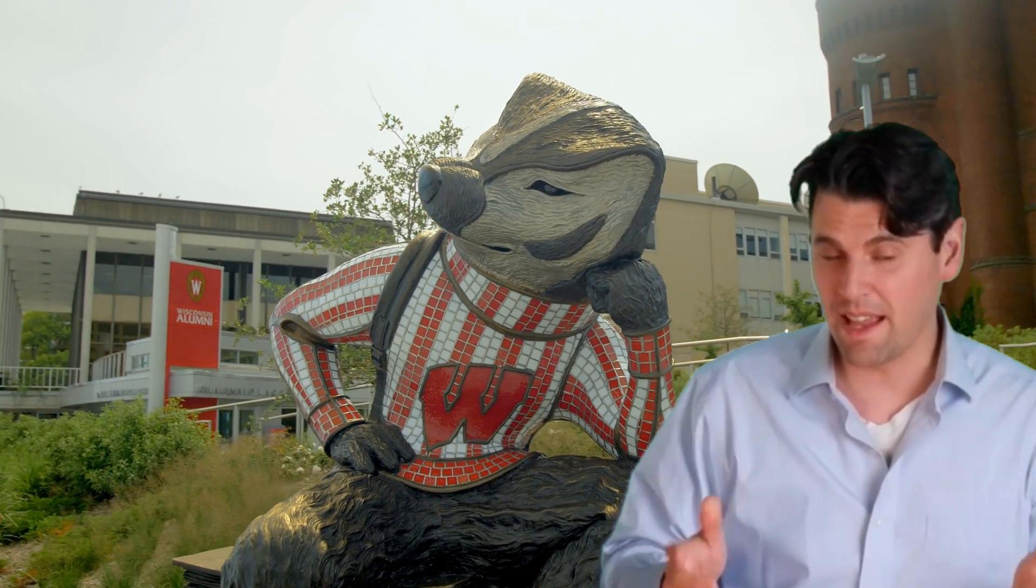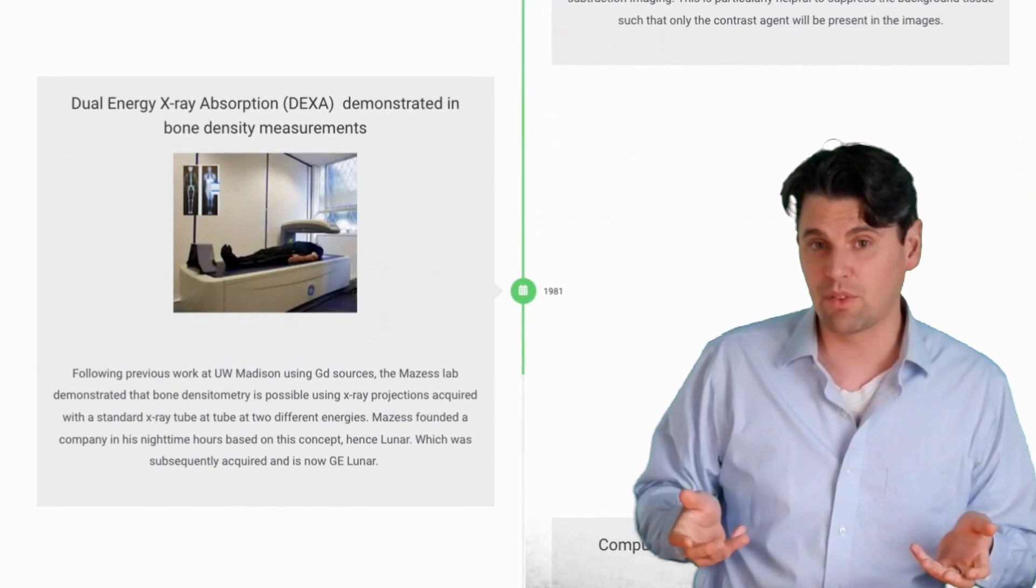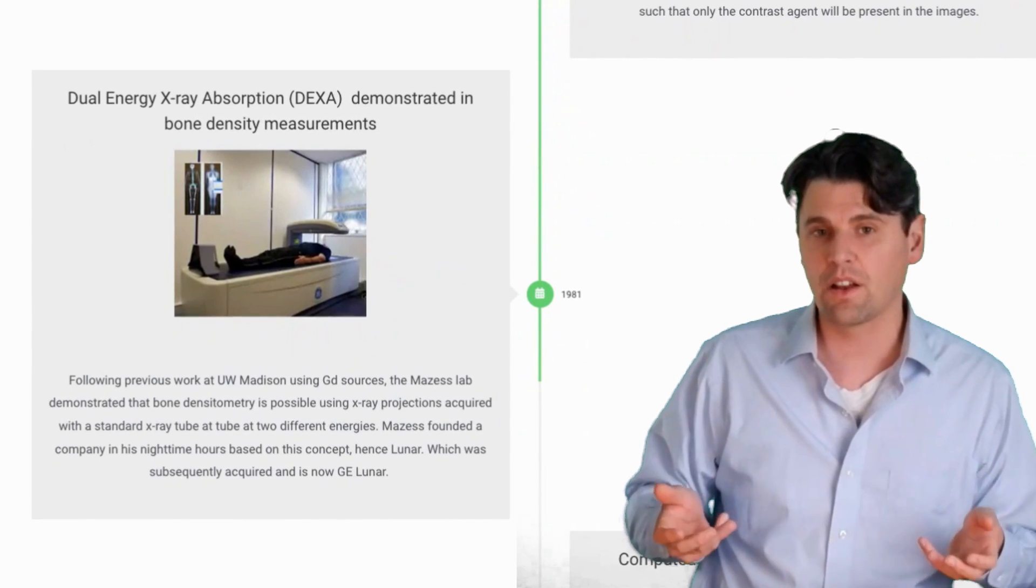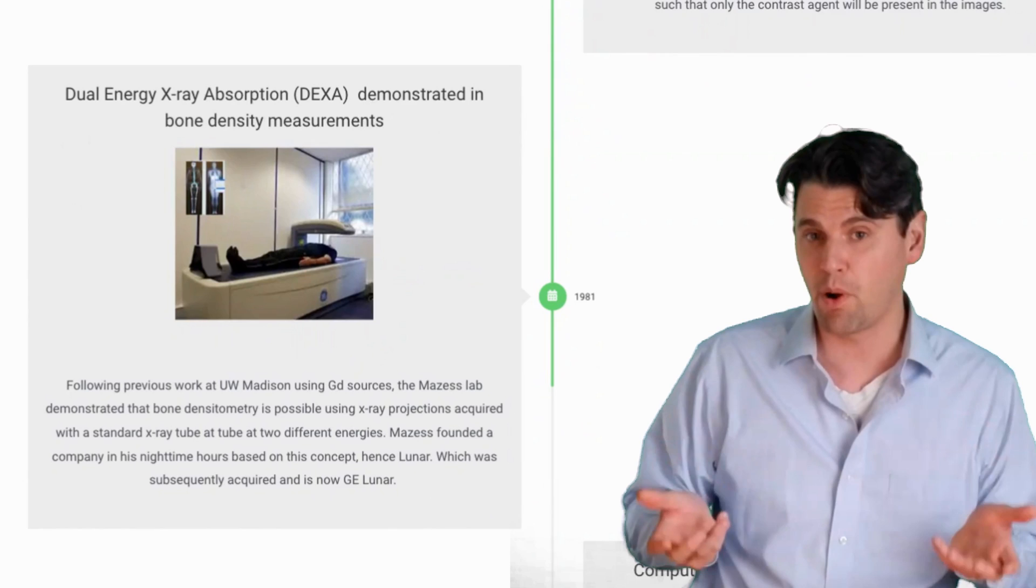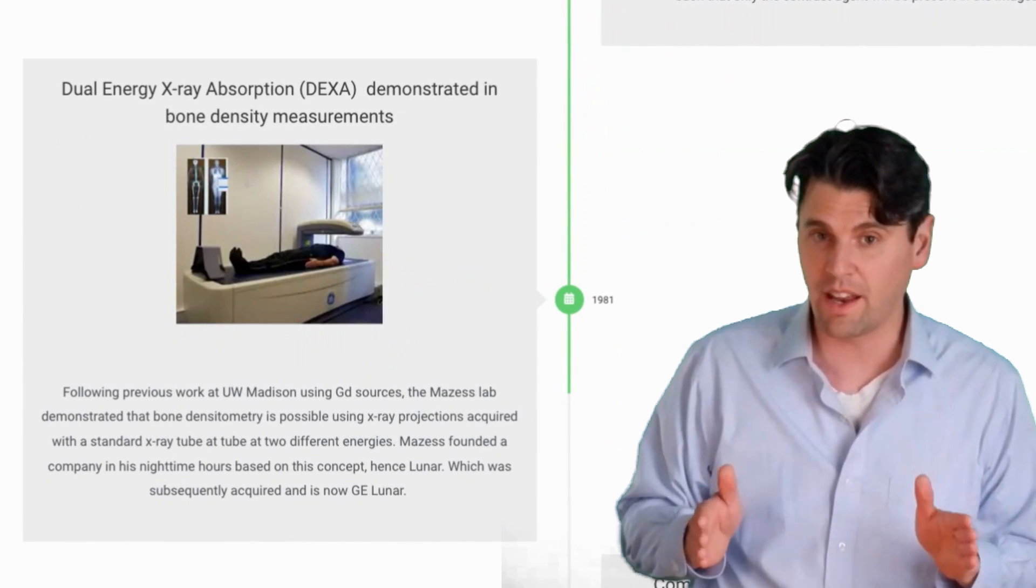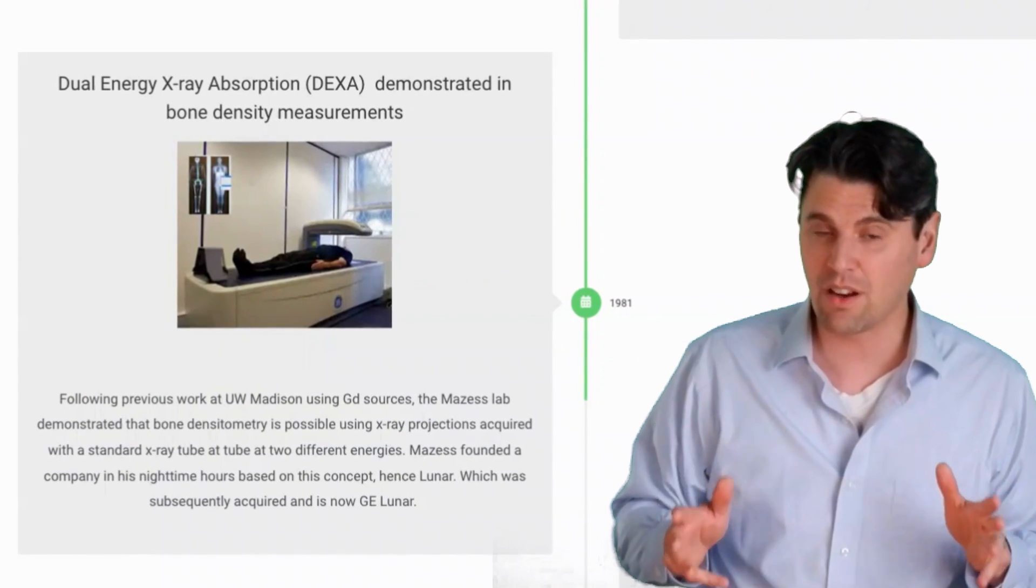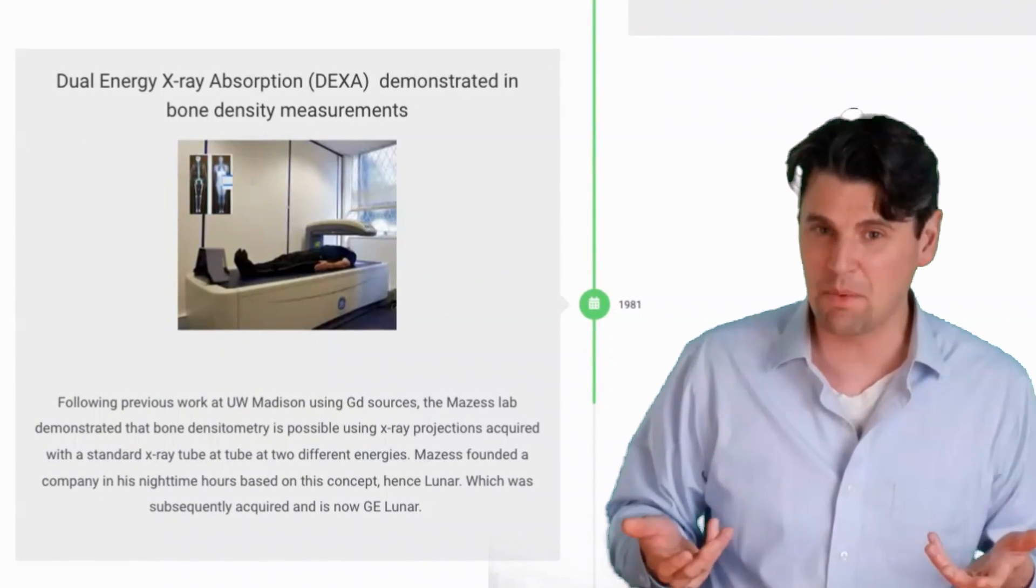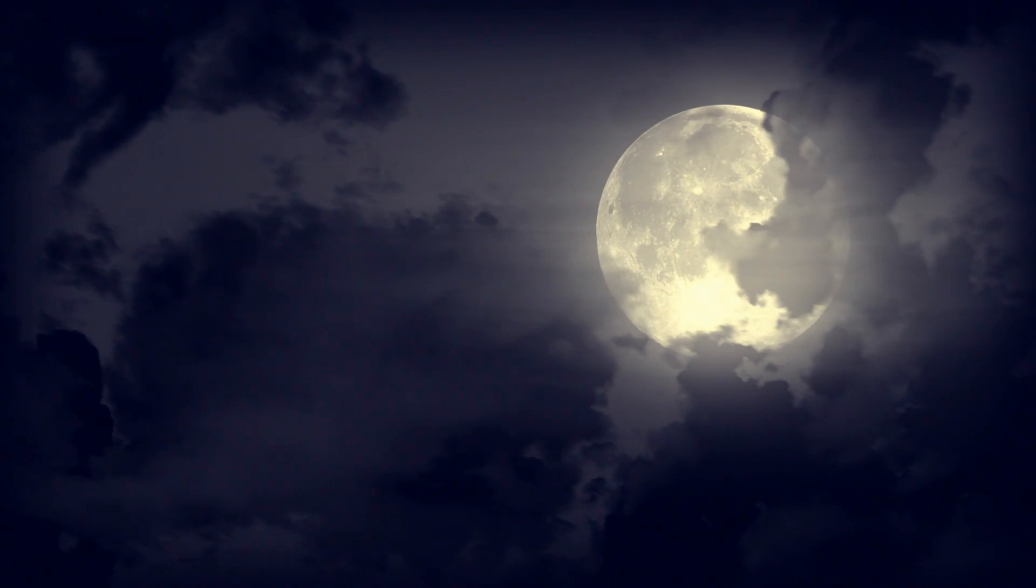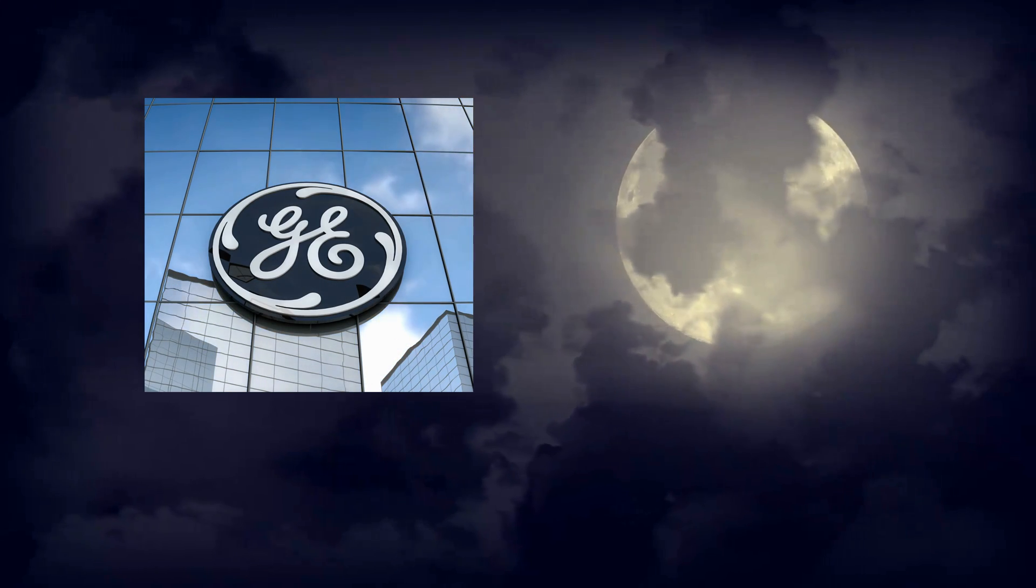Also at Madison was the Mazus lab. The lab first demonstrated that you could use a gadolinium source to look at bone densitometry, and then later demonstrated that you could use X-ray imaging to do bone densitometry. So this is using two different energies of an X-ray beam, so it's so-called dual energy X-ray absorption imaging or DEXA imaging. He started a company during the night, so he called it Lunar because he was working by the moonlight. It was purchased by GE Healthcare and became GE Lunar.